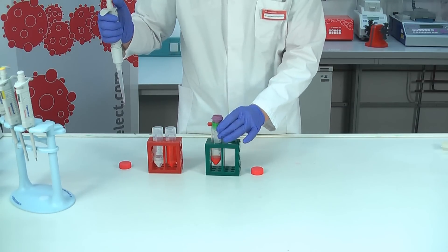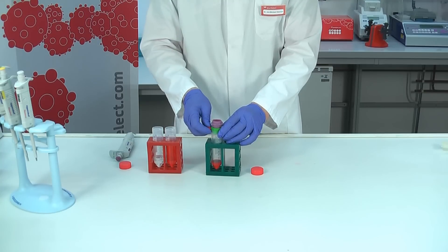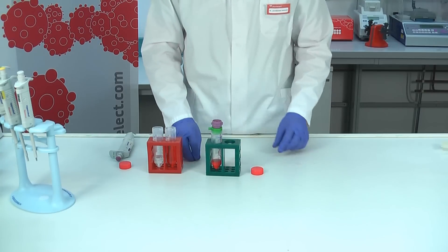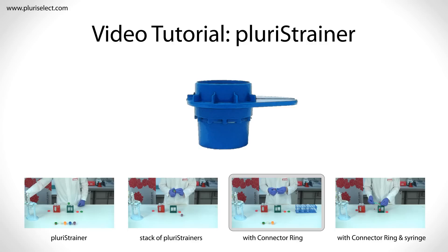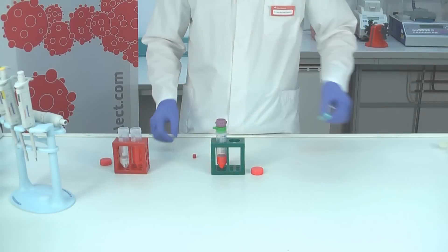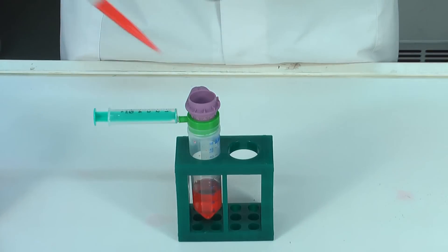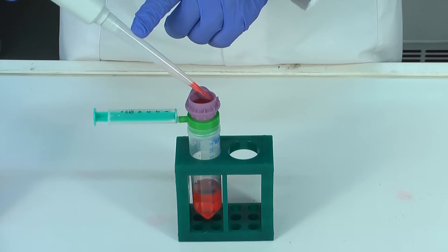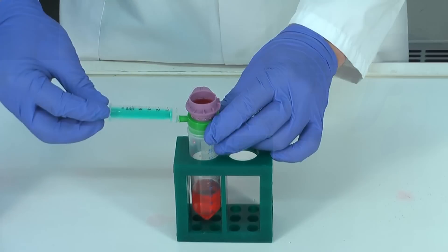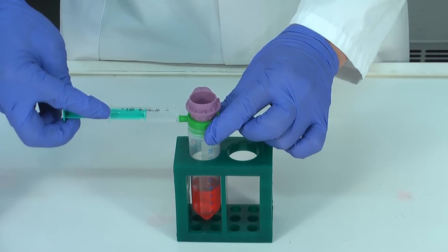It is even possible to force a low pressure while using a syringe in combination with the connector ring. This way you can sieve even rough or more complex sample material, like fat tissue and bone marrow. Add the syringe as shown in the video. Now add your sample material. While pulling the piston, you force low pressure to support the sieving.